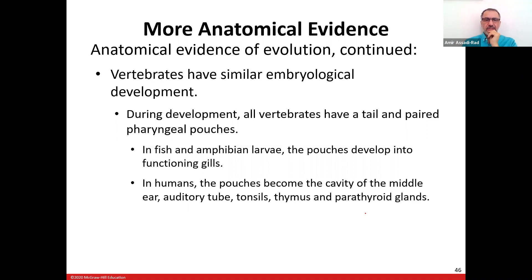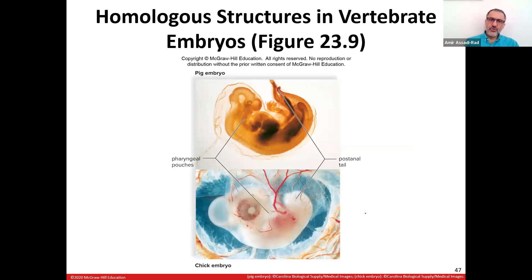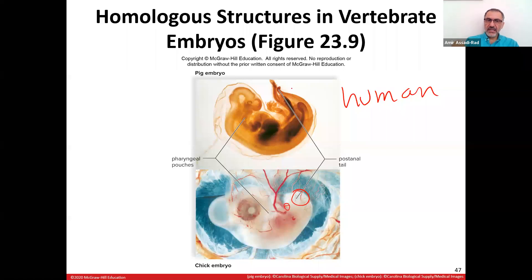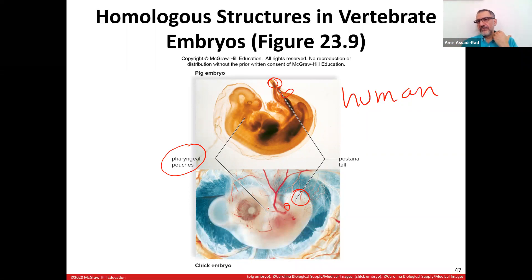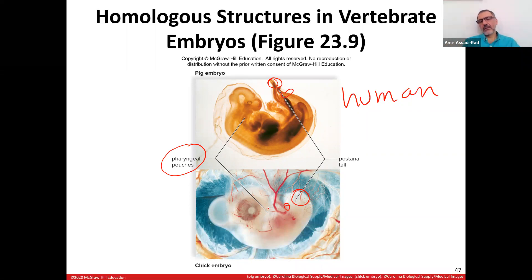More anatomical evidence comes from embryology. A human embryo and a chick embryo look very similar — both have a post-anal tail (a tail behind the anus) and pharyngeal pouches that resemble gills. Since both embryos are in fluid, they need to obtain oxygen, and they have gill-like structures. This is evidence that life originated from the sea.